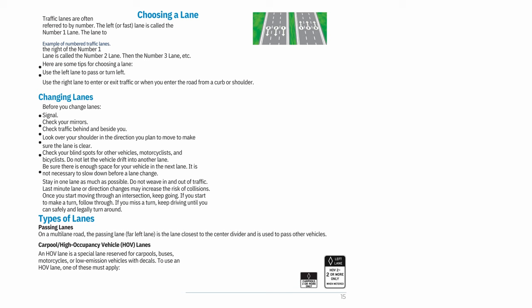Choosing a lane: Traffic lanes are often referred to by number. The left or fast lane is called the number one lane; the lane to the right is called the number two lane, then number three, etc. Use the left lane to pass or turn left; use the right lane to enter or exit traffic. Changing lanes: Before you change lanes — signal, check your mirrors, check traffic behind and beside you, look over your shoulder in the direction you plan to move to make sure the lane is clear, and check your blind spots for other vehicles, motorcyclists, and bicyclists.